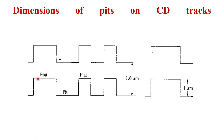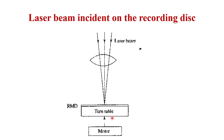The data is recorded in terms of flats and pits. If this is the first track and this is another track, the difference between two tracks — called the track pitch — is 1.6 micrometers. The depth of that particular pit is 1 micrometer. The motor drives the turntable and you put data on the disc, which is called the resist master disc.